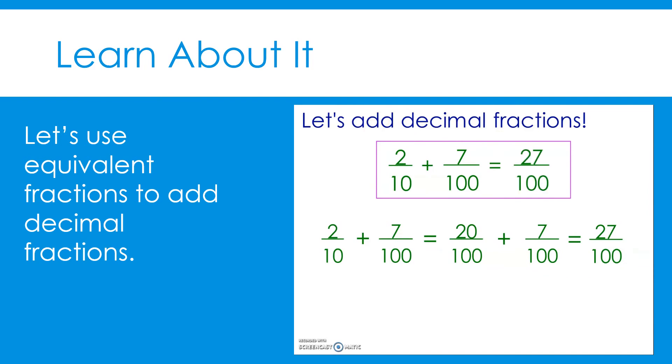Our estimation was correct — our sum is less than one-half. Fifty-hundredths is equivalent to one-half, and twenty-seven hundredths is less than fifty-hundredths.